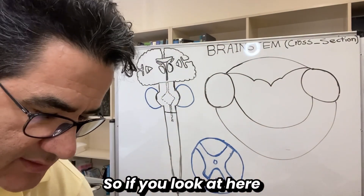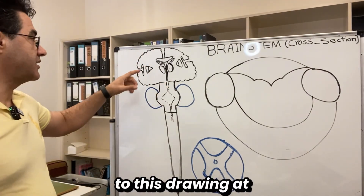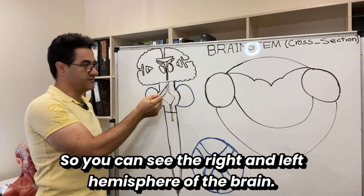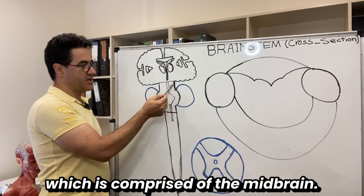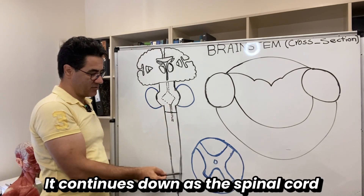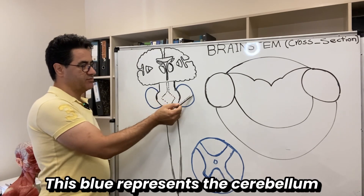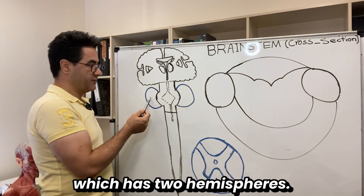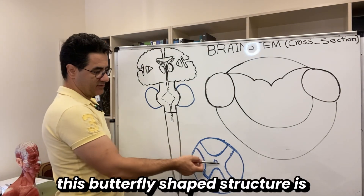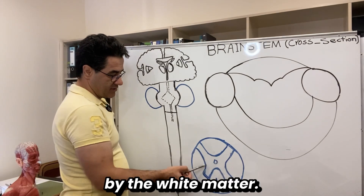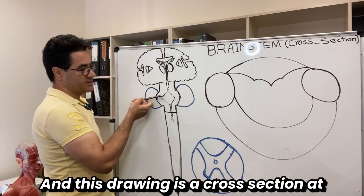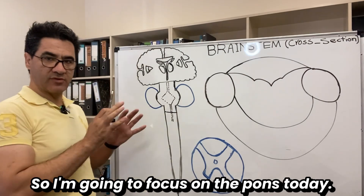If you look at this drawing, at the top we have a coronal section of the brain showing the right and left hemispheres. In the middle we have the brainstem, comprising the midbrain, the pons, and the medulla oblongata, which continues as the spinal cord. Behind the brainstem, this blue area represents the cerebellum with its two hemispheres. A cross-section through the spinal cord shows the butterfly-shaped gray matter surrounded by white matter, with the central canal at the center. This drawing shows a cross-section at the level of the pons.